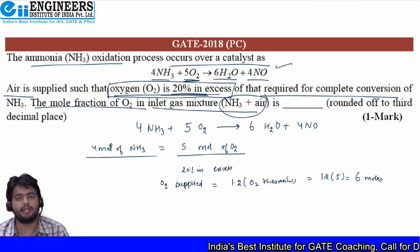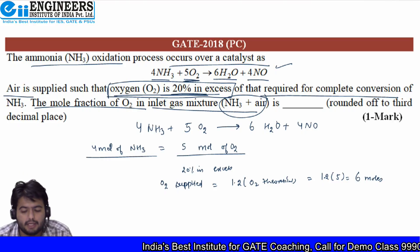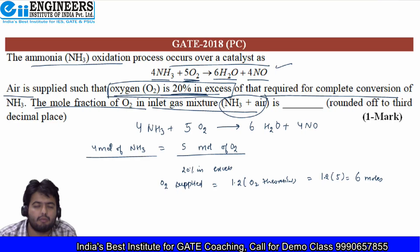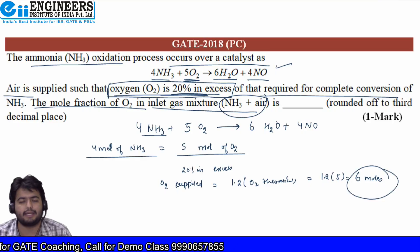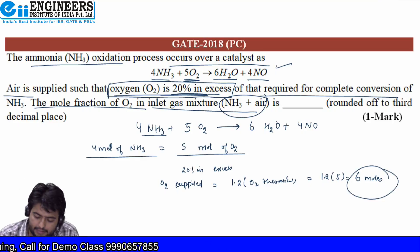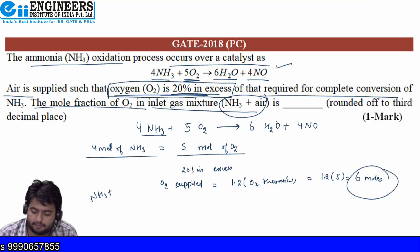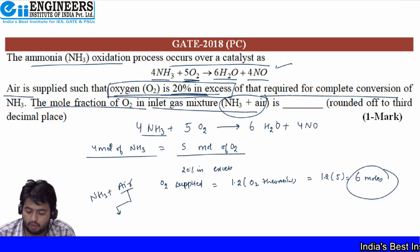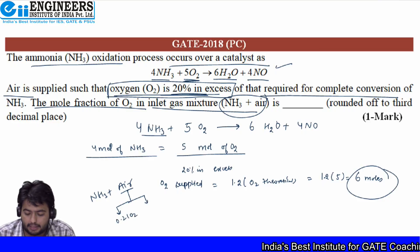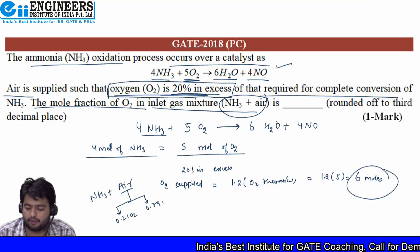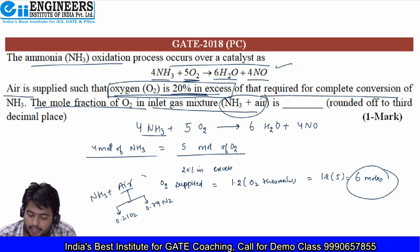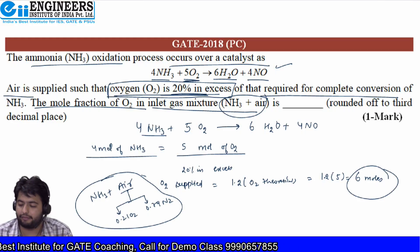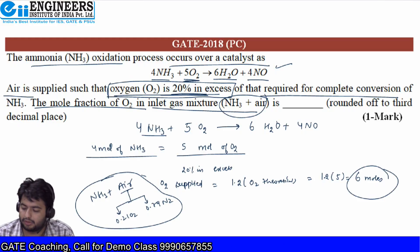The oxygen supplied in the form of air is equal to 1.2 times the theoretical O2 required, which is five. So it becomes 1.2 × 5 = 6 moles. Hence we have supplied 6 moles of oxygen. Now we have to find how much oxygen is in the feed mixture. The feed contains ammonia and air, where air composition is 21 mole percent oxygen and 79 mole percent nitrogen.